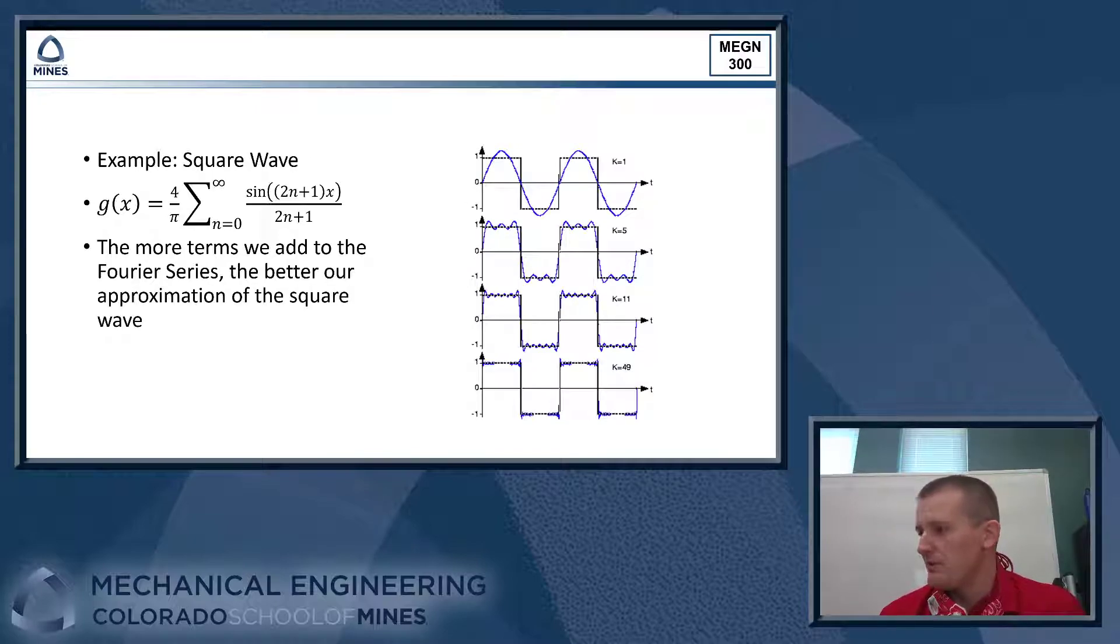Let's take a look at an example of one of these. So if we wanted to construct a square wave, this is actually the Fourier series that will build you a square wave if you have an infinite number of sine waves. And we can look at this in the graph here on the right where we're adding more and more of these frequency components together.